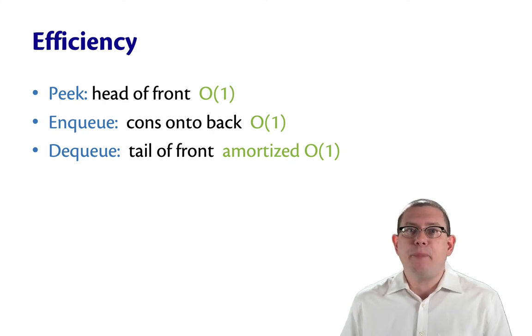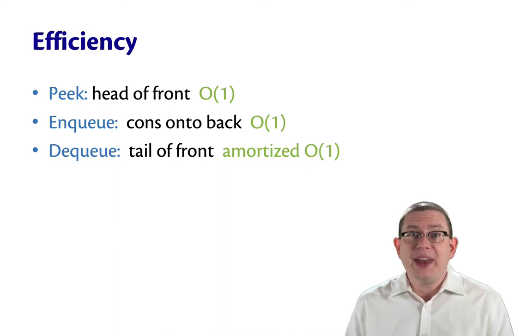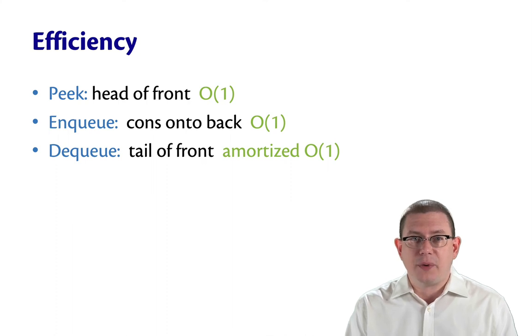But by playing this budgeting trick, this bookkeeping trick, we can say that on average, every operation is only costing us a constant amount because we get to spread out the cost of that expensive operation over the inexpensive operations.